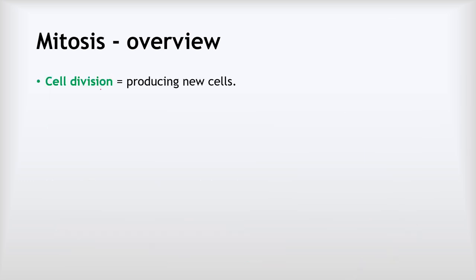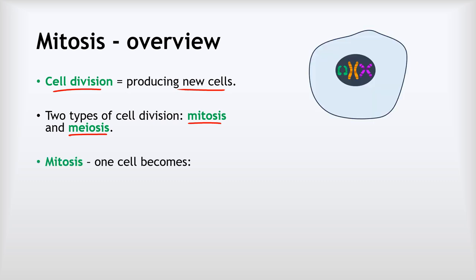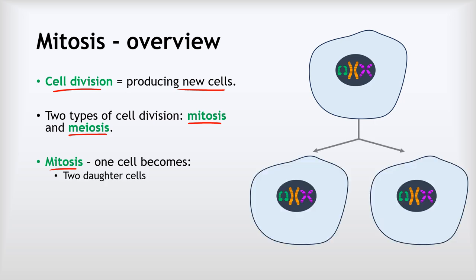Mitosis is a type of cell division — the process of producing new cells where one cell divides and becomes two cells. There are two types of cell division: mitosis, which we'll concentrate on for the next few slides, and meiosis, which we'll look at shortly. In mitosis, one cell becomes two daughter cells.